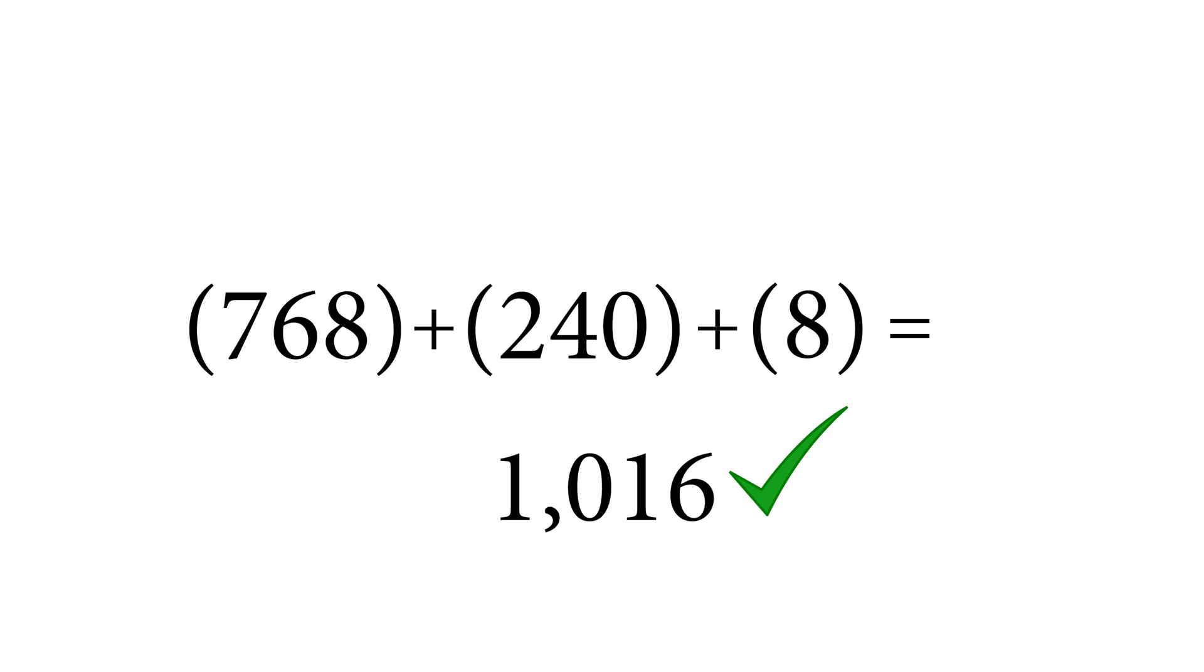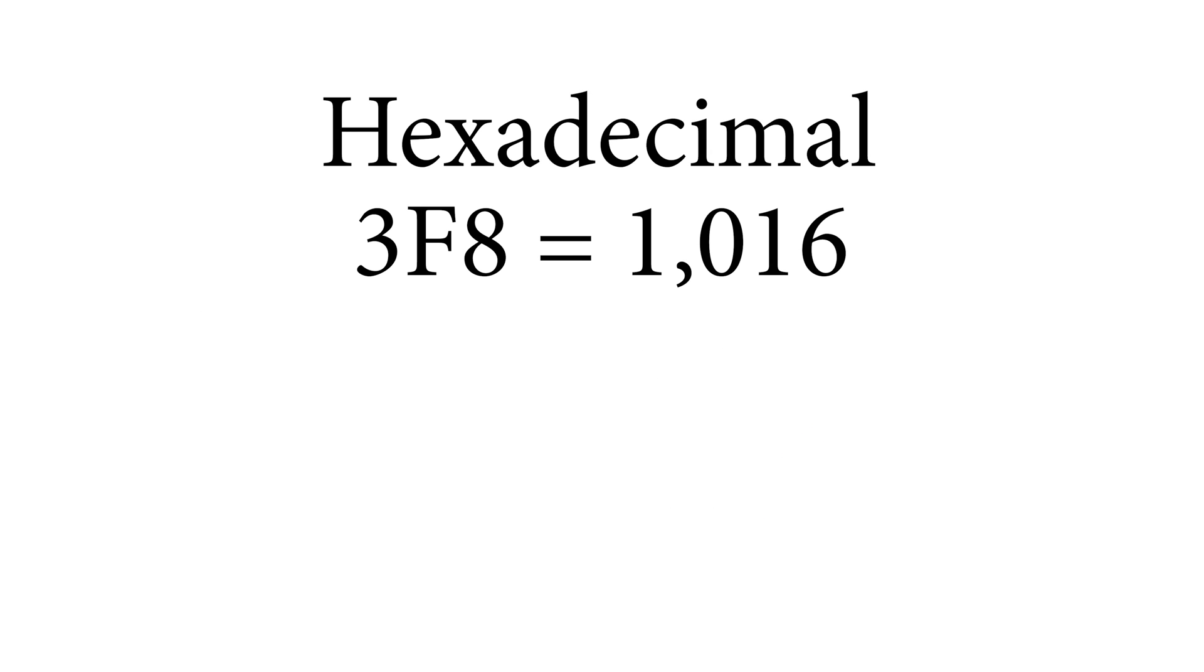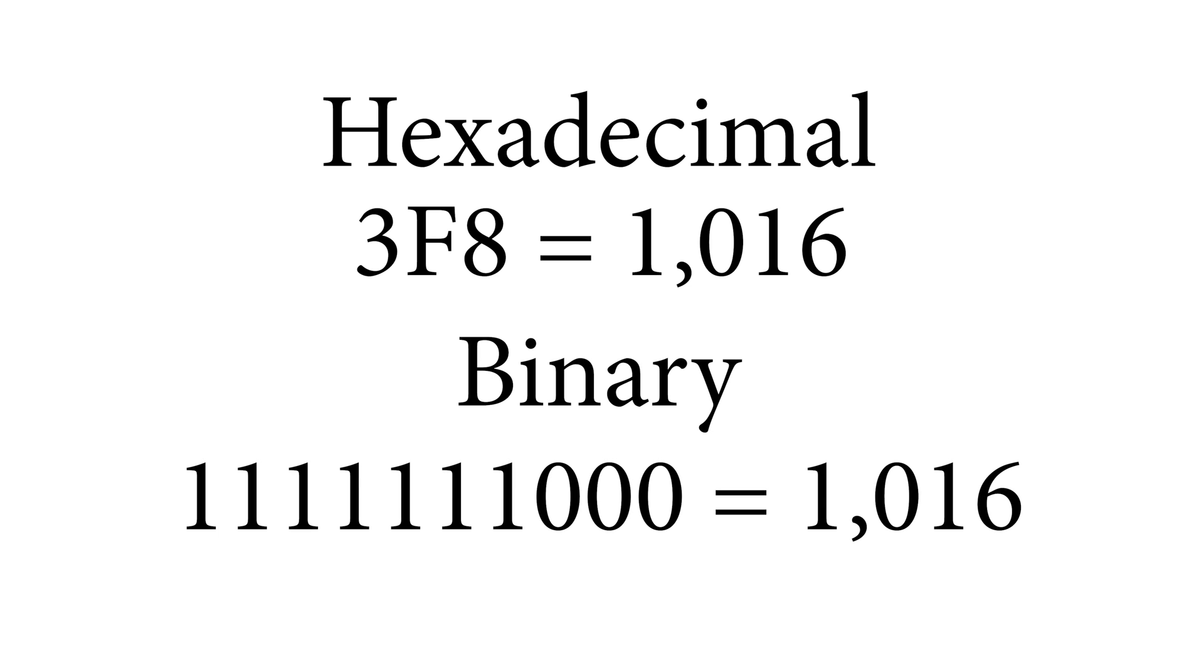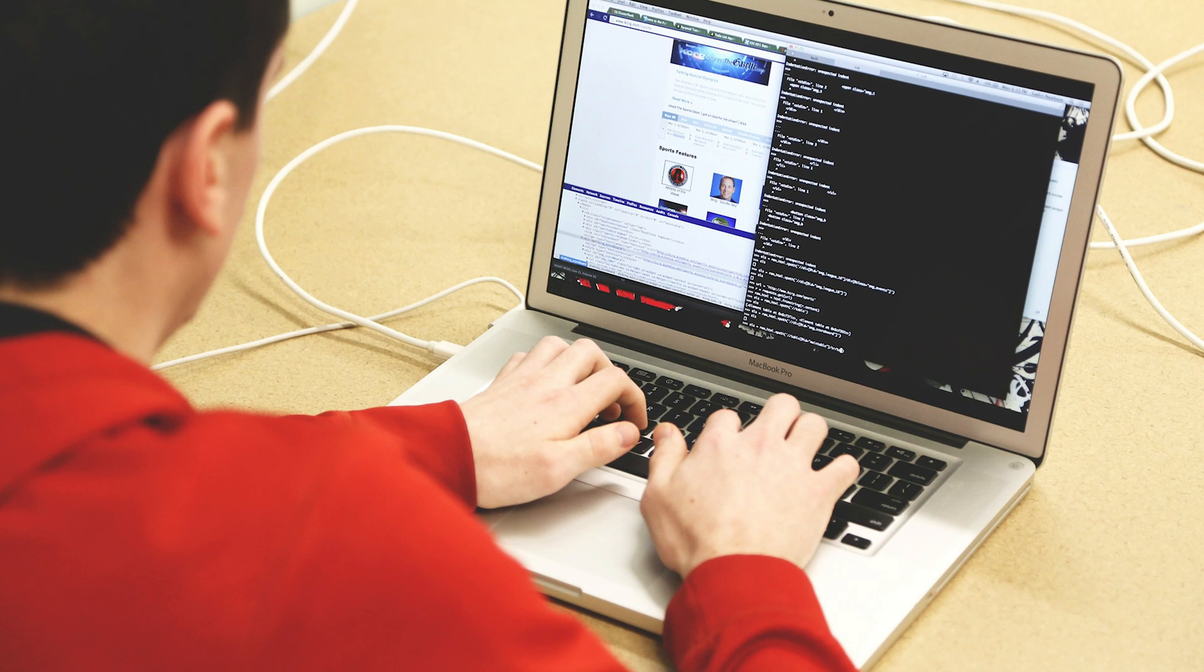So that is our decimal number and if you're wondering why we have hexadecimal, the binary version of that is 1111111000. So if you can see how much easier it is using hex to convert larger numbers, especially it's a lot easier for humans.